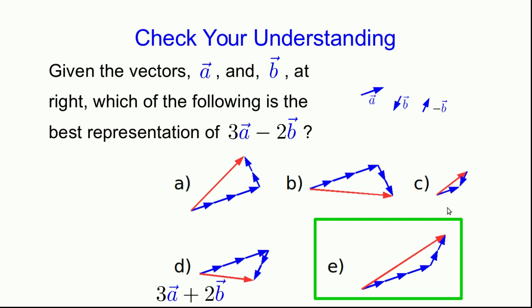You might have been tempted by d but note d isn't 3a minus 2b, it's 3a plus 2b. B points in that direction and there are two of those here.